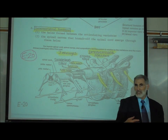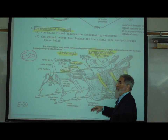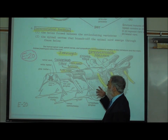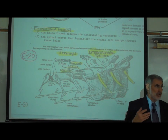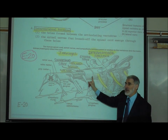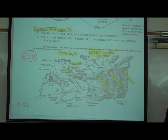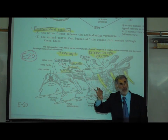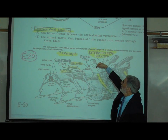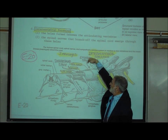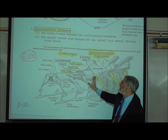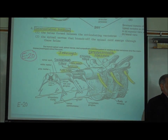The word dura mater literally means 'tough mother' — dura like durable, and mater is Latin for mother. We've mentioned previously that the dura mater is made up of regularly arranged dense fibrous connective tissue, the same tissue that's tough like a tendon, to protect the brain and spinal cord. An injection of local anesthetic just outside the dura mater is placed in the epidural space.